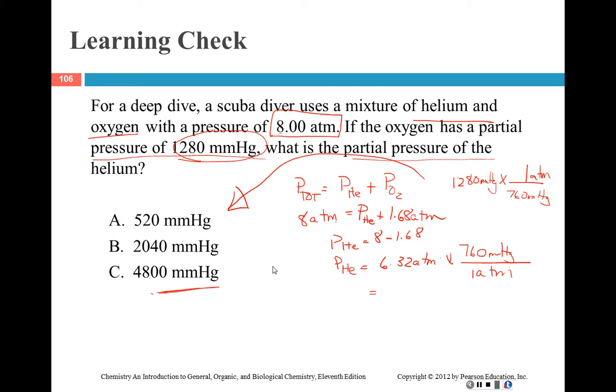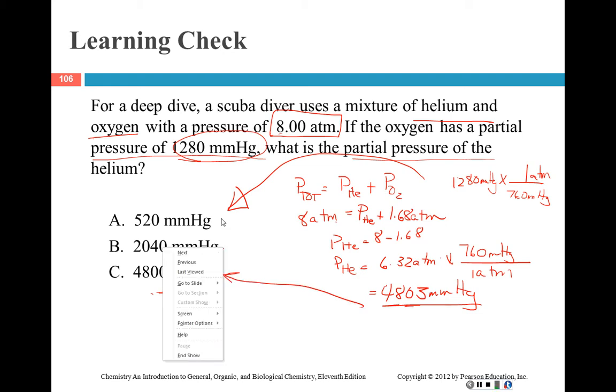I got 4803. Now you literal people are going to be going, that's not on there, that's not one of those answers. Well, 4803 is close enough for government work to 4800, because it ain't 2040 and it ain't 520, right? So 4800 millimeters of mercury is correct.